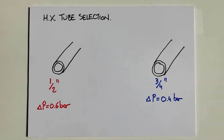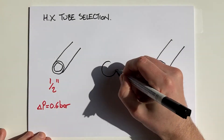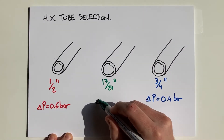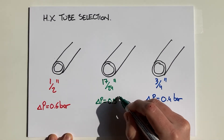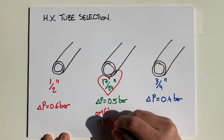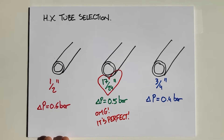Now you're under your budget. You could go and calculate the theoretically perfect tube size that gives you exactly half a bar at design flow, but that thing will end up being a custom built part that will cost you way more, and the only benefit is it makes you feel good about your calculation. You pick the three quarter inch tube, you're under the budget, you're happy.